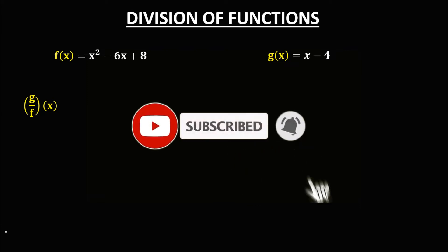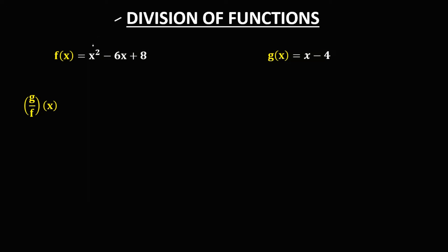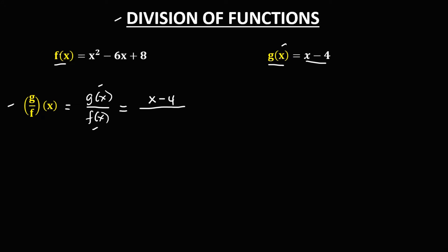Welcome to MathStorya. For the division of functions, we have two given functions, f(x) and g(x). To find this function, we can rewrite it as g(x) over f(x), then substitute the values: g(x) is x minus 4, over f(x), which is x squared minus 6x plus 8.